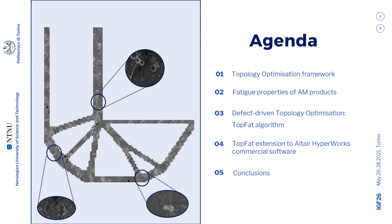The presentation will be divided in five main sections. In the first, I will introduce the topology optimization framework. In the second section, I will briefly explain the key factors affecting the fatigue response of additive manufacturing products. In the third section, I will introduce the TopFAT algorithm aimed at including the defect population analysis within the topology optimization setup. In the fourth section, I will detail how to extend the TopFAT procedure to the commercially available software HyperWorks. And lastly, conclusions and final remarks.